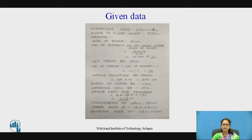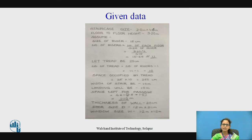This is the data which is provided. The staircase block size is given as 2m by 4.6m. All dimensions are in meters and the scale used is 1 to 30. You are supposed to draw this staircase using the mini drafter. The floor to floor height is given as 3.2m. Let us consider that this is a public building.